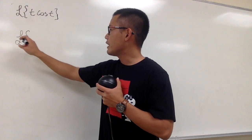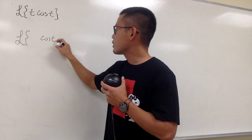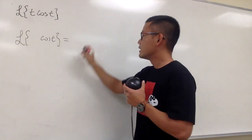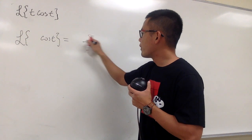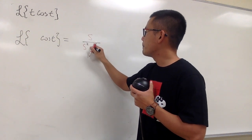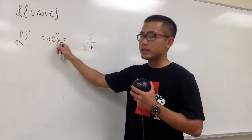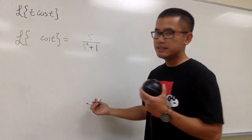We know that when we have the Laplace transform of just cosine t, this is going to be s over s squared plus 1 squared, which is just 1.